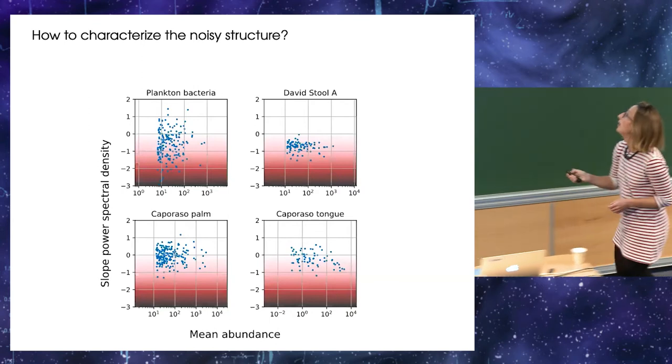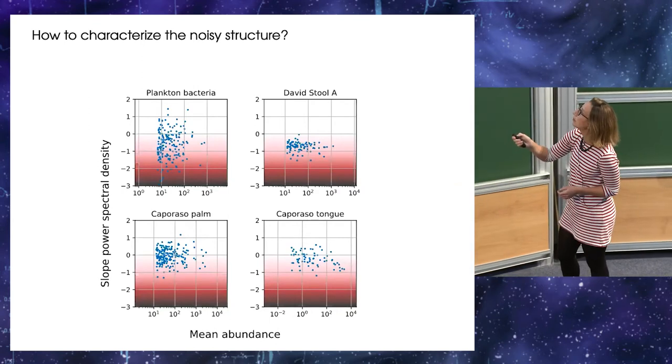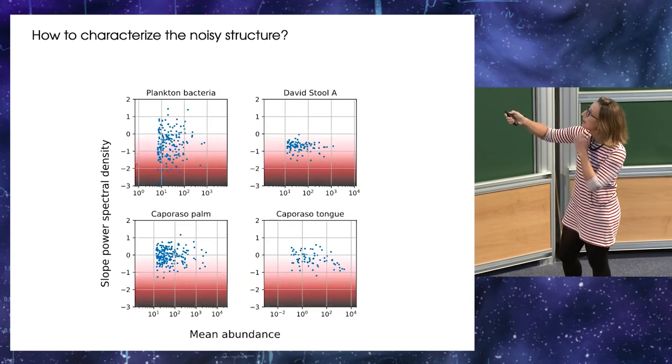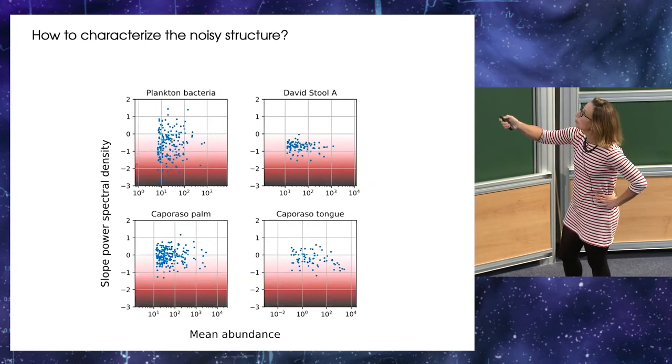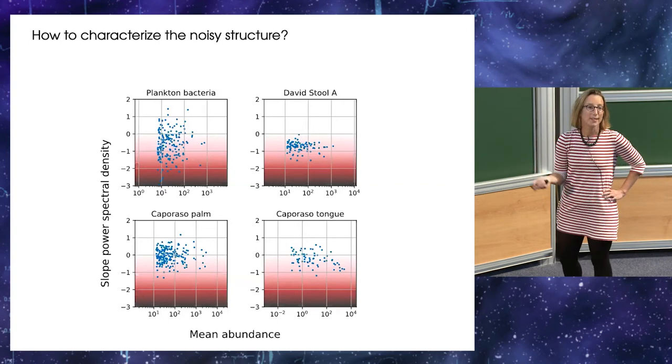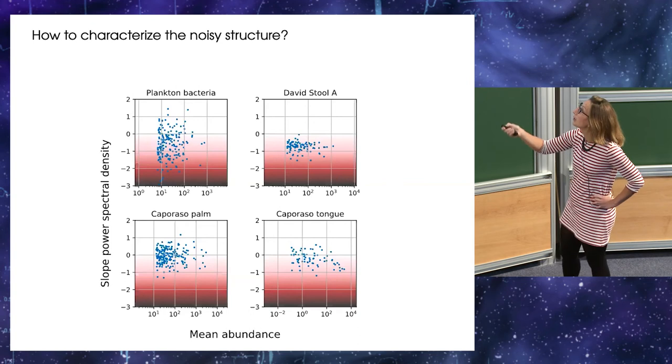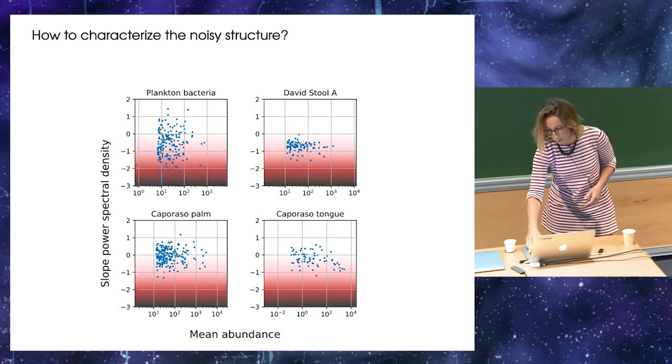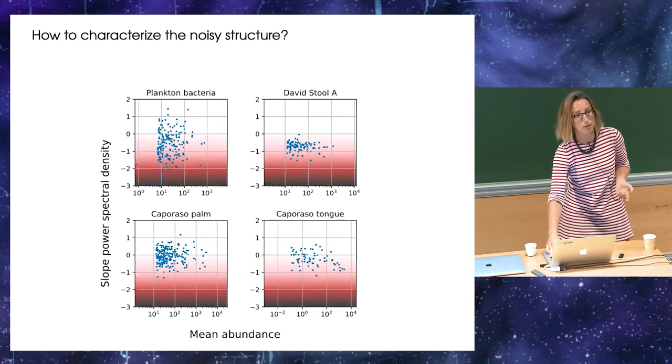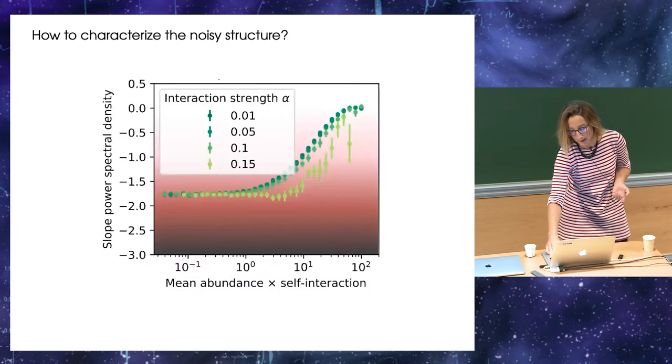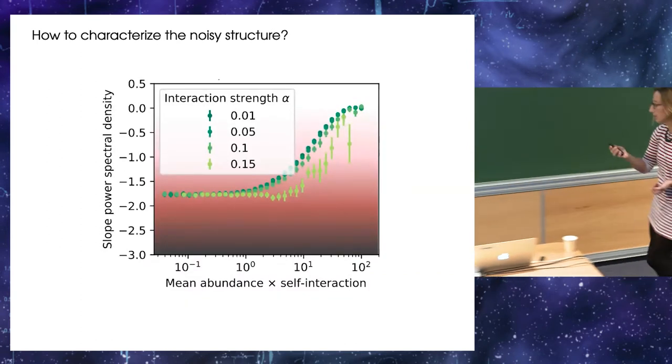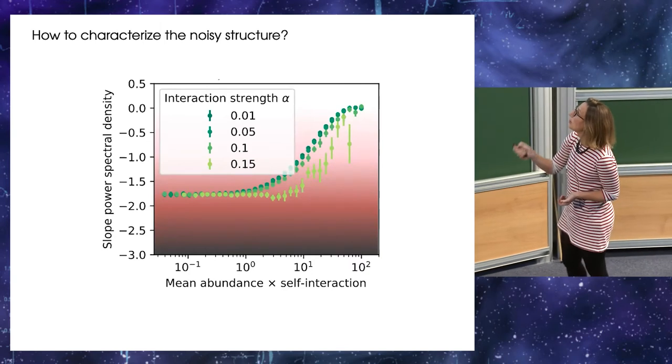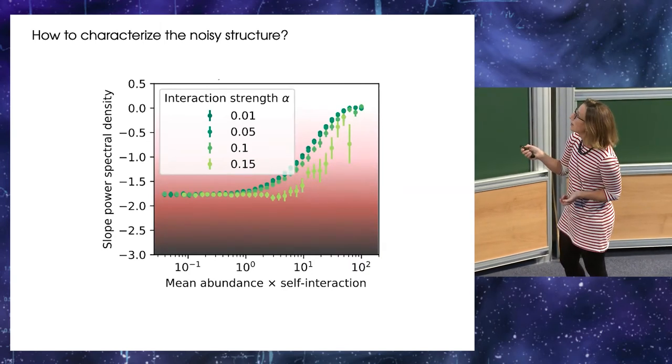And then we, so for each community, so one dot is one species, and we see that, like the slope, so the color of the noise for each species, when we plot that against the mean abundance of the species, we see that there is no correlation. So this might seem, like, not that interesting. Why plotting that as a function of the mean abundance if we don't see any structure? But the thing is that if we now do in silico time series with the GLV model, we see structure.